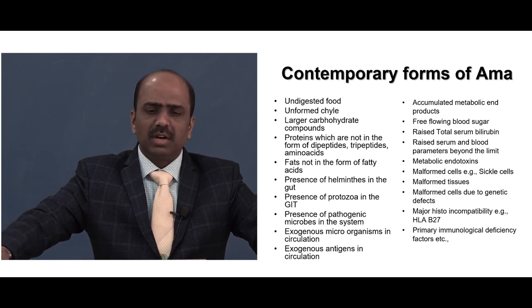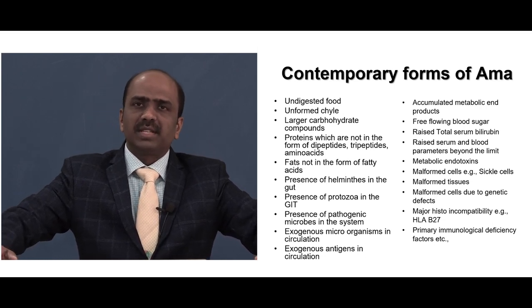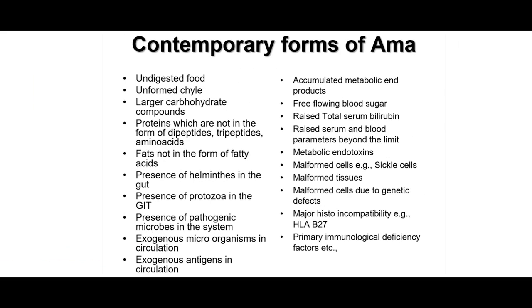There are different contemporary forms of Ama. Anything unwanted, present at an unusual time, can be considered Ama — for example, in diabetes mellitus, raised blood sugar is again Ama. Contemporary forms include undigested food, unformed large carbohydrate compounds, proteins not in the form of dipeptides, fats not in the form of fatty acids, presence of proteose in the GIT, and free accumulated metabolic end products.